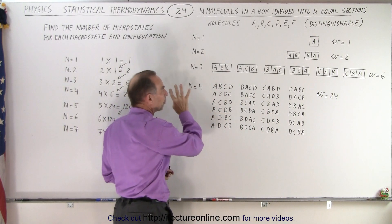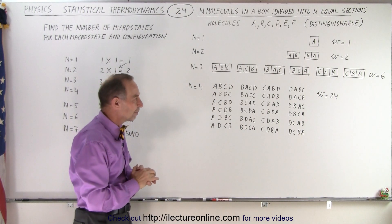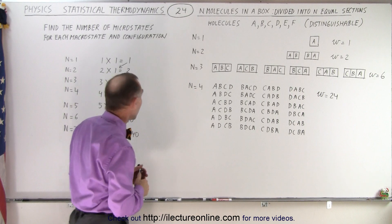And then, if n goes to 4, four molecules, four partitions in the box, now there's 24 microstates. There's an interesting pattern here which I wanted to point out.